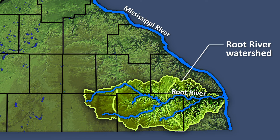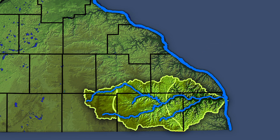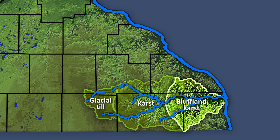From west to east, these landscapes include glacial till, karst, and bluffland karst. Let's first discuss the glacial till landscape.